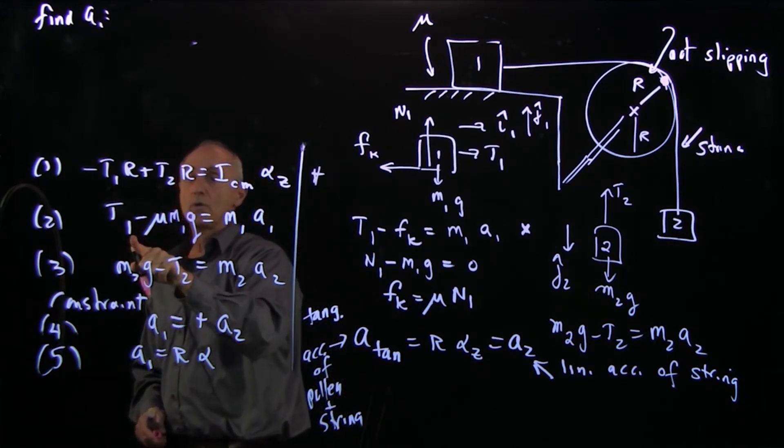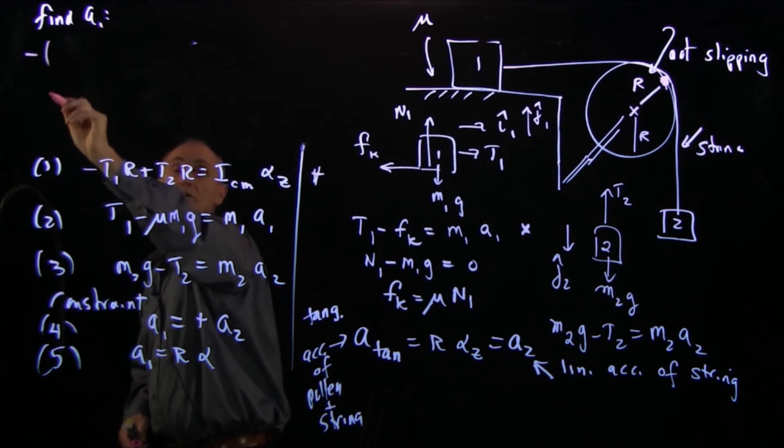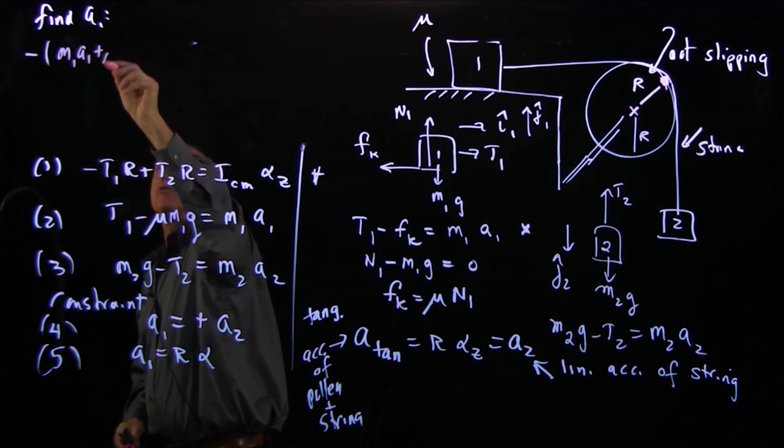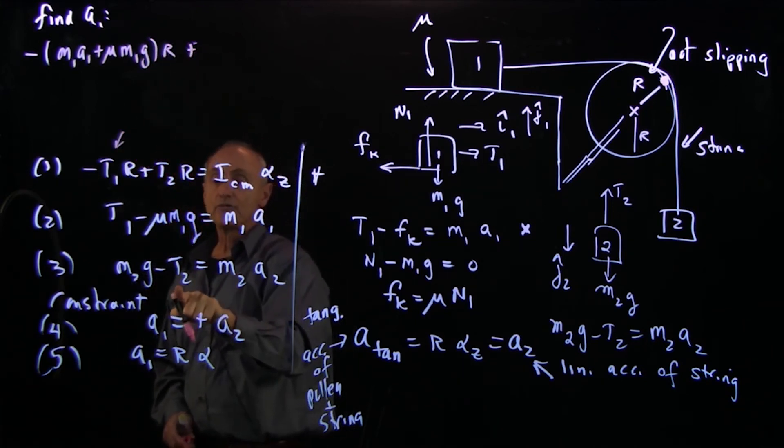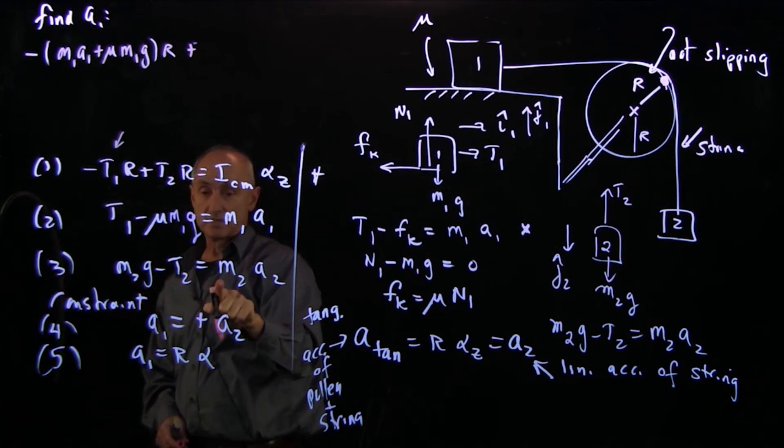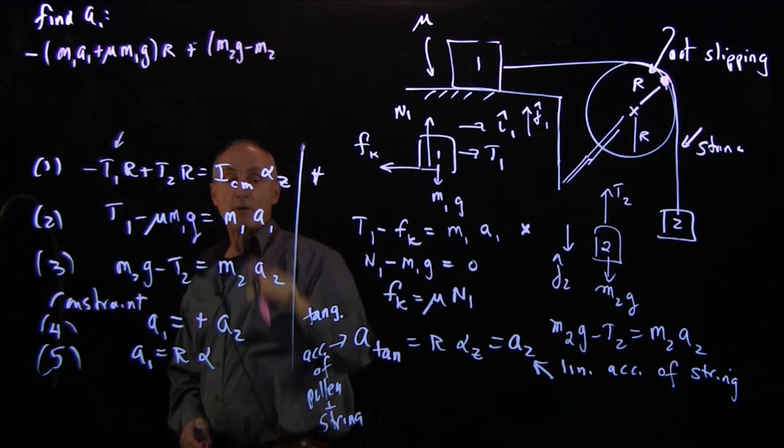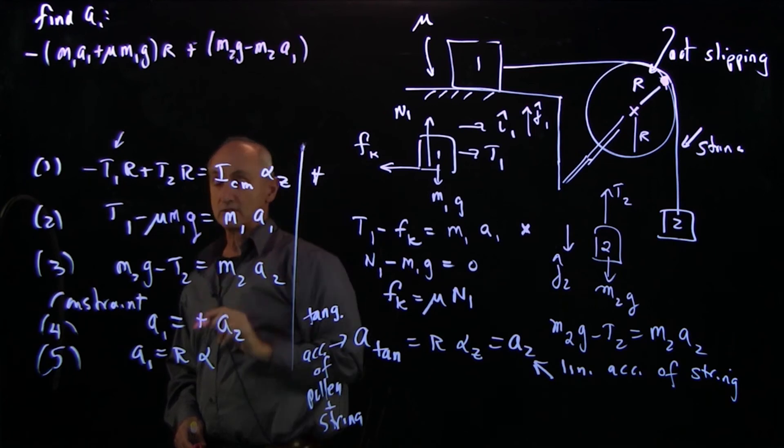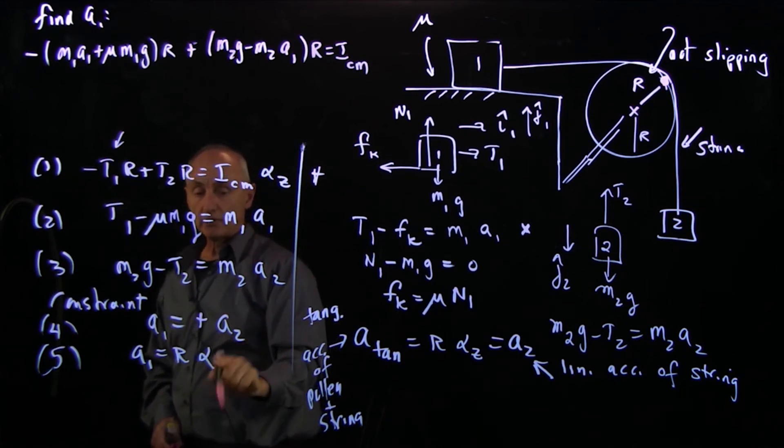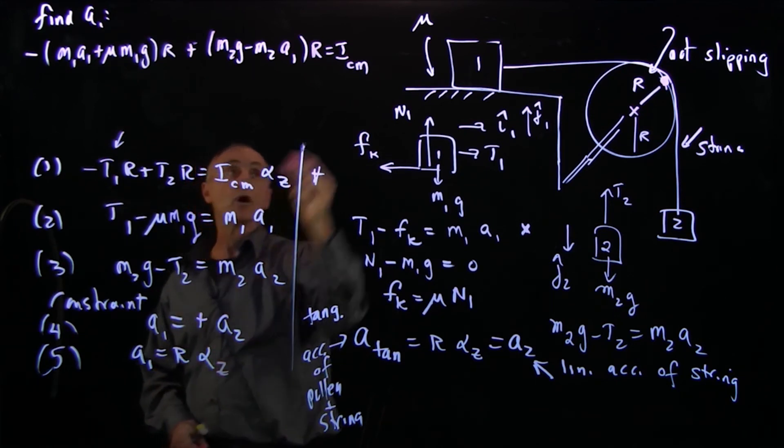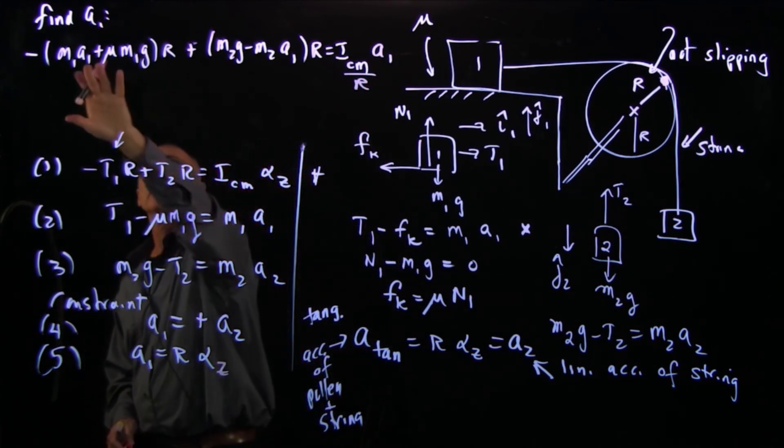Now let's do that. When I solve this equation for T1 equal to M1A1 plus mu M1g, with a minus sign I get minus M1A1 plus mu M1g times r. That's my first piece. I solve for T2, which is M2g minus M2A, so I get M2g minus M2. Now A2 is equal to A1, so I make my second substitution, multiply it by r, and that's equal to ICM. And now I make my final substitution, that alpha z is equal to A1 over r.